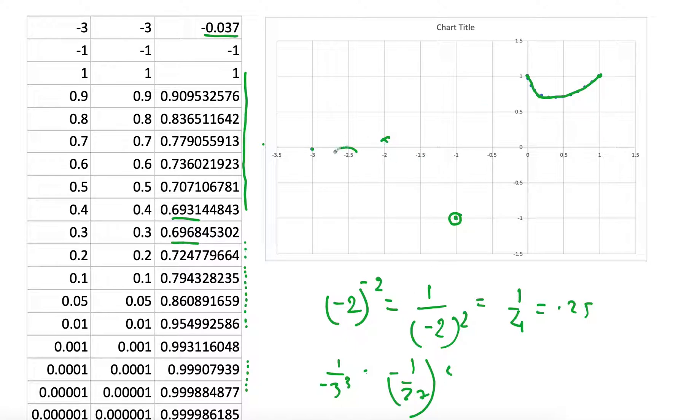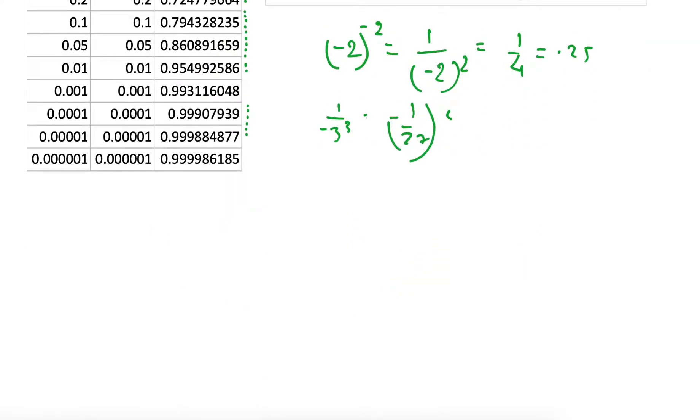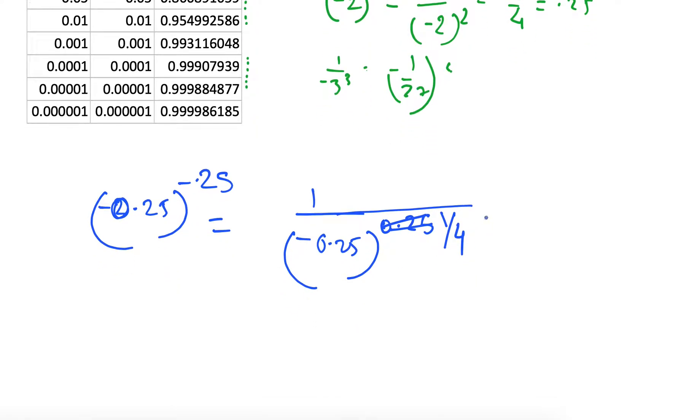But what about these intermediate values, minus 0.25? Can we find the value of minus 0.25 raised to the power minus 0.25? So it will be equal to 1 over minus 0.25 raised to the power of 0.25. And 0.25 is nothing but 1 over 4. So we have to find 1 over minus 0.25 raised to the power 1 over 4. So for the value of this term, the denominator, we want to find a number k such that if we do k to the power 4, it becomes minus 0.25.